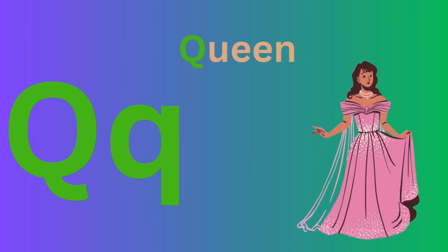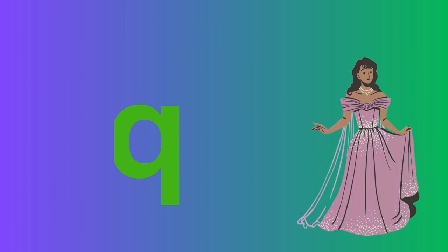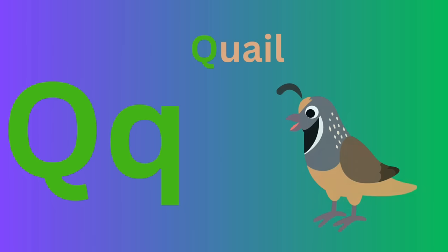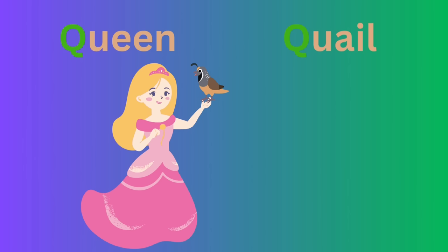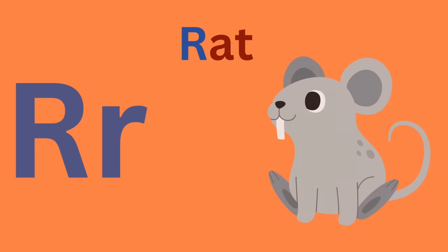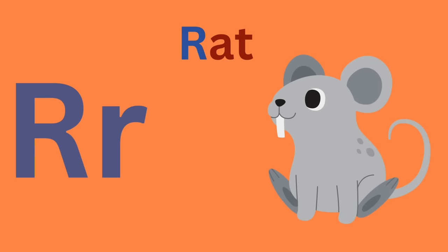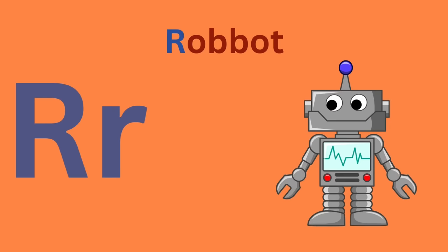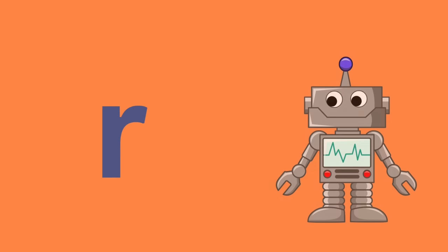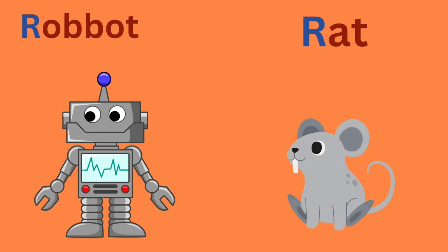Q for queen. Q for quail. Q for queen and Q for quail. R for rat. R for robin. R for robin and R for rat.